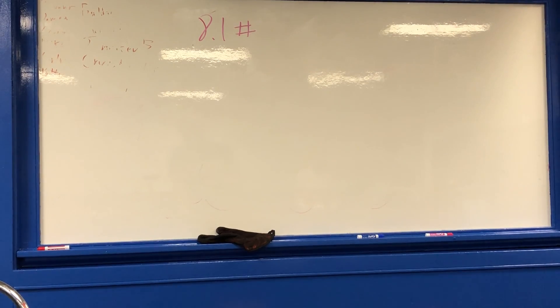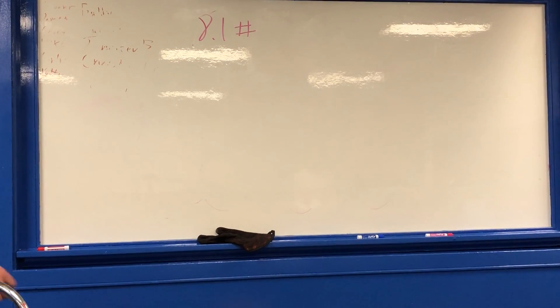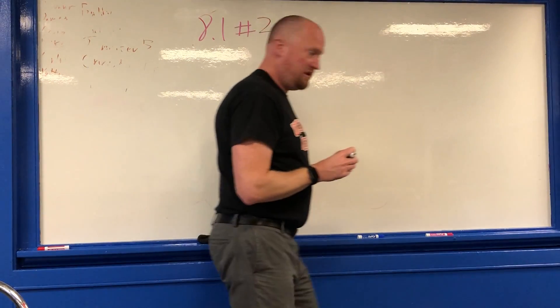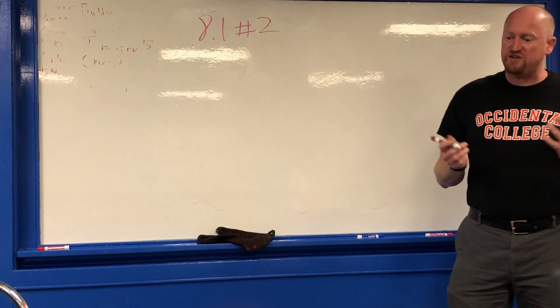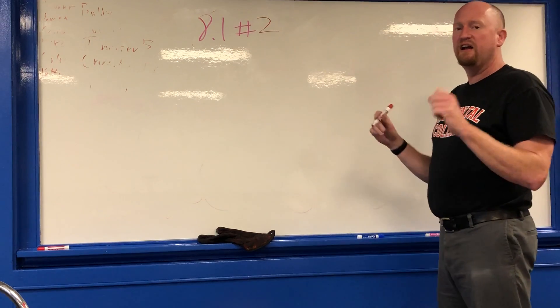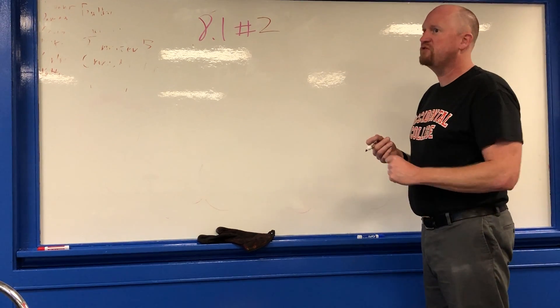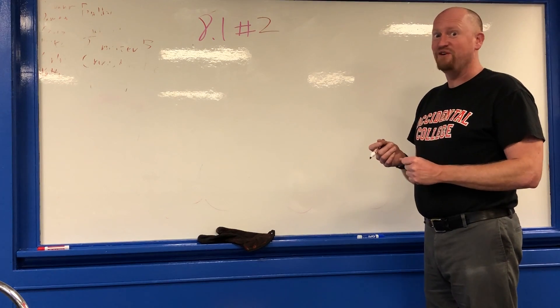Hello! So what we're doing right now is 8.1 number 2. In 8.1 number 2, we are going to say, what if I were made of gold? Same size, just imagine a golden statue of me. Pretty cool, eh?